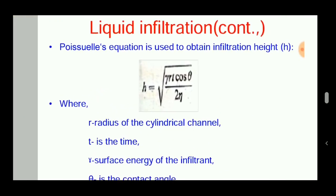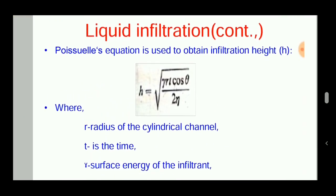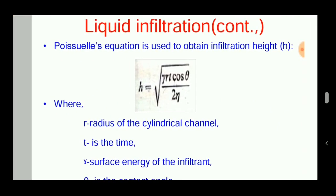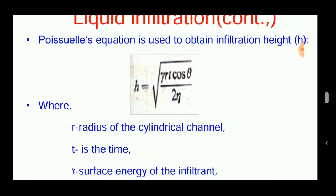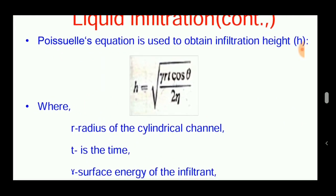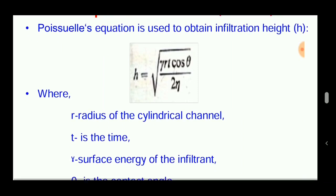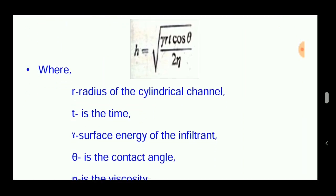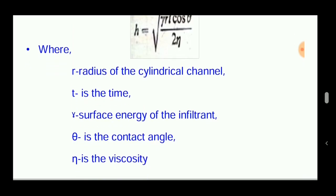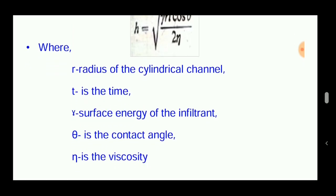The liquid infiltration height is also an important parameter included in this process. Poiseuille's equation is used to obtain the infiltration height: h equals the square root of gamma r t cosine theta divided by 2 eta. Where r is the radius of the cylindrical channel, t is the time, gamma is the surface energy of the infiltrant, theta is the contact angle, and eta is the viscosity.